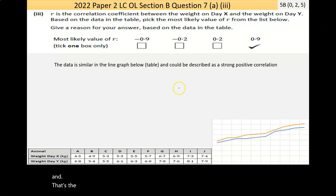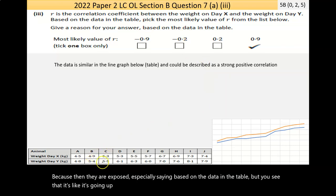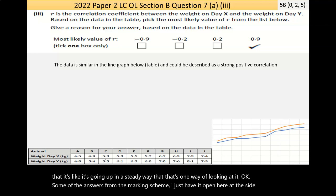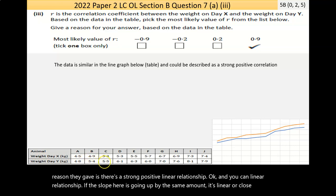And that's the answer. I always find these questions strange, but I've seen the data graphed. And they are, I suppose, explicitly saying based on the data in the table. But you'll say that it's going up in a steady way, that's one way of looking at it. Now, some of the answers from the marking scheme, I just have it open here on the side. One reason they gave is there's a strong positive linear relationship. And you can, linear relationship, if the slope here is going up by the same amount, it's linear, or close to the same amount.